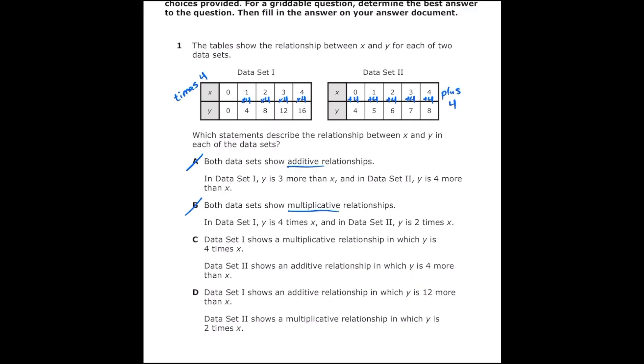Letter C says data set one shows a multiplicative relationship in which y is four times x. That sounds good. And it also says data set two shows an additive relationship in which y is four more than x. That is also true, so my correct answer is letter C.